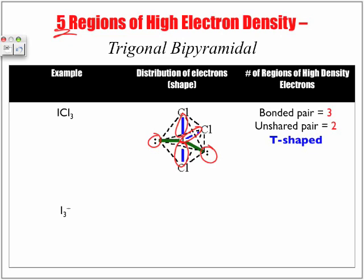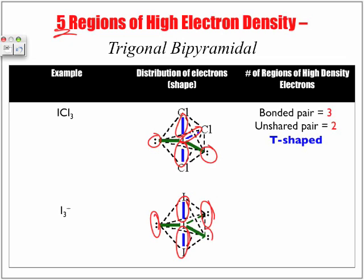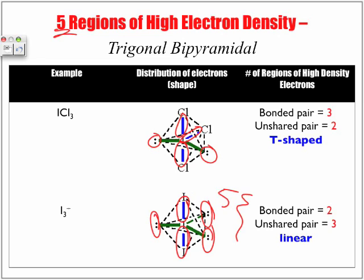Our last example for five regions is I3 with a negative one charge. All three iodines are bonded to one another, but one iodine represents the central atom, which means we have two bonded pairs and three unshared pairs — still a total of five regions. Here we're looking at a linear shape. As noted, all our five-region examples still have five regions total; the difference from trigonal bipyramidal is the number of unshared pairs of electrons.